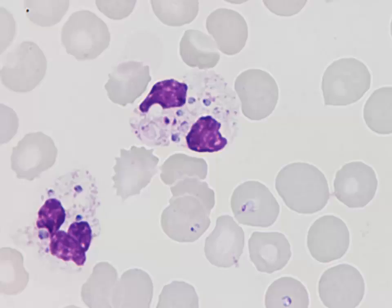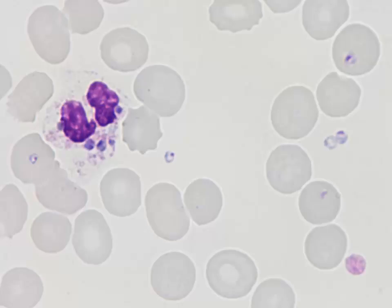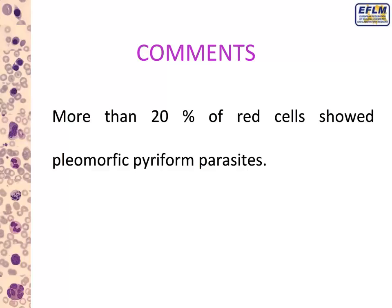This is another interesting finding in peripheral blood in this infection. You can see two neutrophils, and inside the cytoplasm of the neutrophil — the white blood cell — you can see some parasites. This is very typical of this kind of infection. We can also see some other infected red cells. And looking at the last image: a big platelet, red cells, a neutrophil with some parasites inside, and some extracellular rings. More than 20% of the red cells in the peripheral blood of this patient showed pleomorphic piriform parasites.